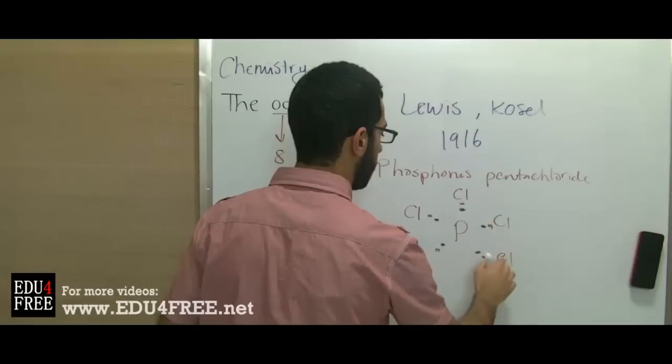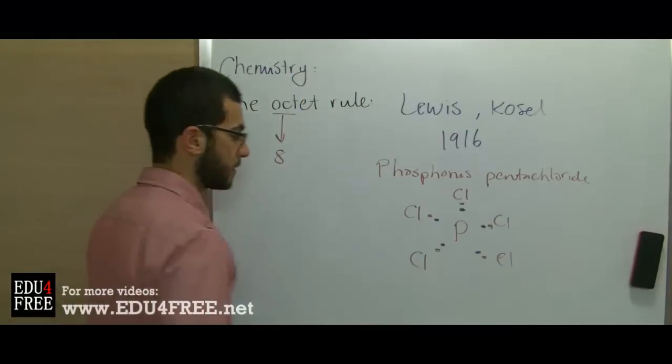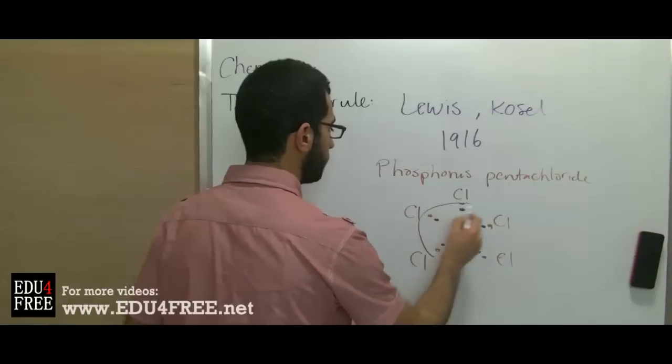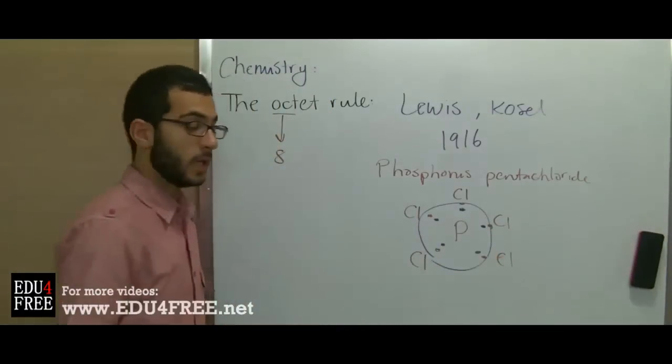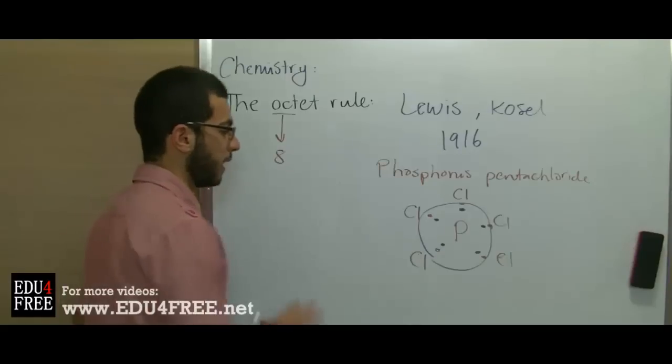The total number of electrons in the outermost energy level of phosphorous will be 10 and not 8. This is the first failure.